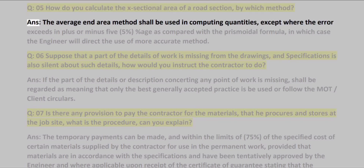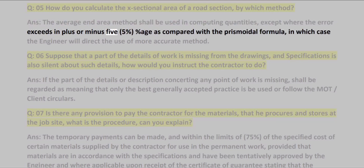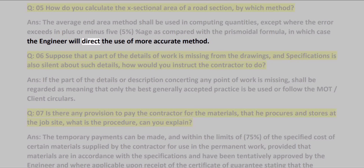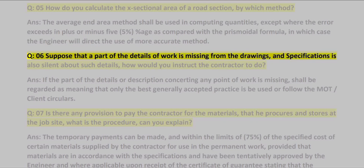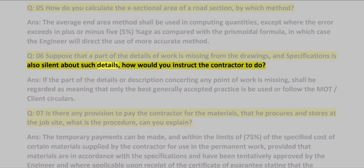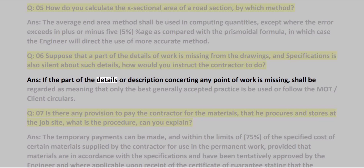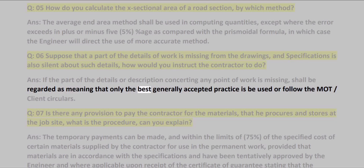The Average Area method shall be used in computing quantities, except where the error exceeds plus or minus 5% as compared with the prismoidal formula, in which case the engineer will direct the use of a more accurate method. Q06: Suppose that a part of the details of work is missing from the drawings and specifications is also silent about such details — how would you instruct the contractor? ANS: If the part of details or description concerning any point of work is missing, it shall be regarded as meaning that only the best generally accepted practice is to be used, or follow the MOT/client circulars.